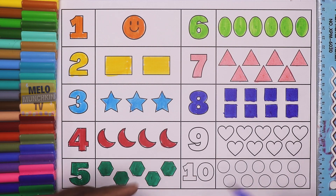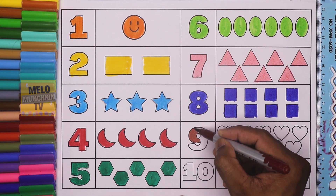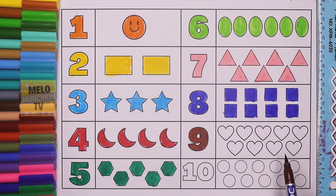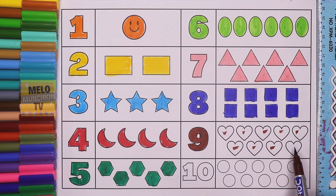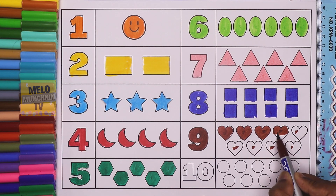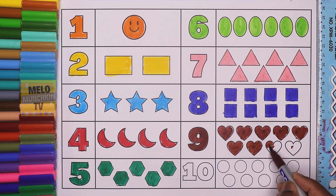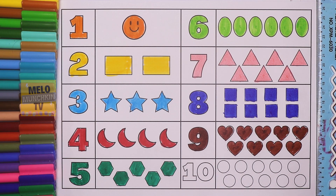Next, I'll use brown color to color number nine — N I N E, nine. And these are hearts. How many hearts? Let's count: one, two, three, four, five, six, seven, eight, and nine. Let's color them: one, two, three, four, five, six, seven, eight, and nine. Nine hearts.